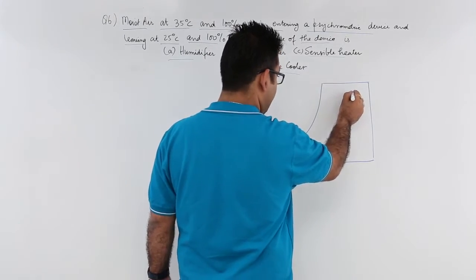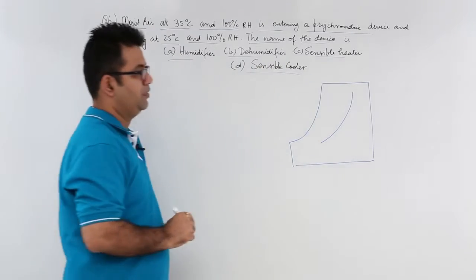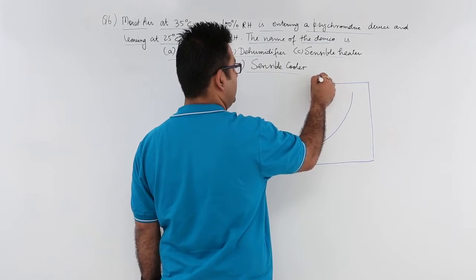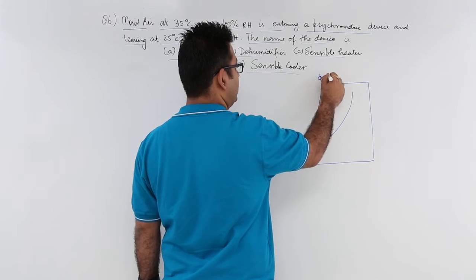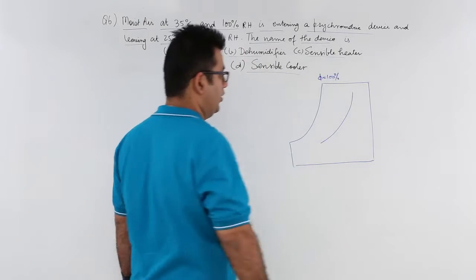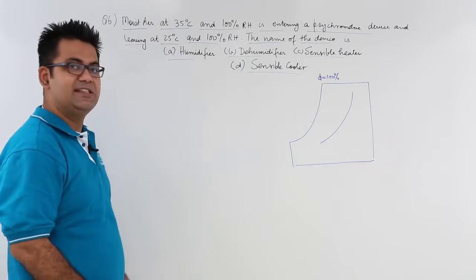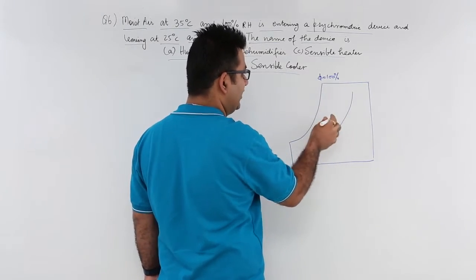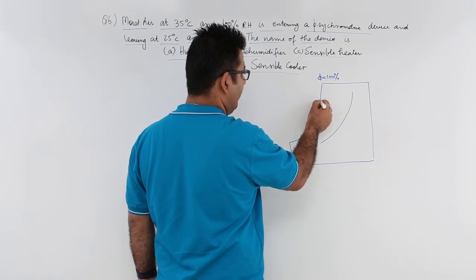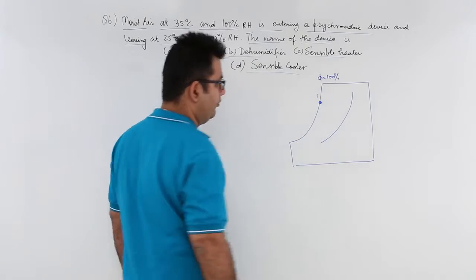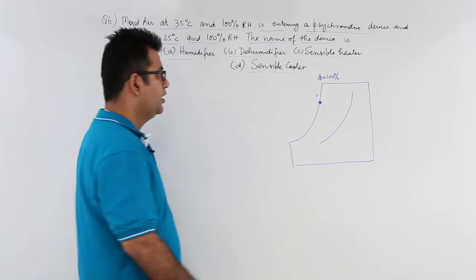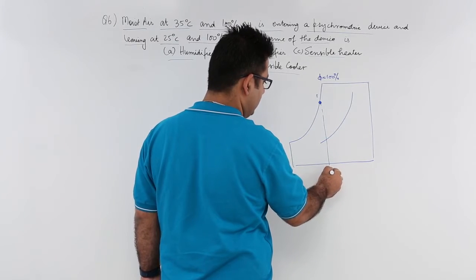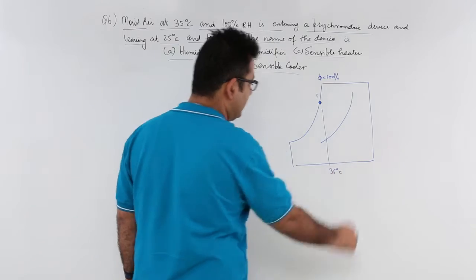Now this is your RH curve. This is 500%. Your DBT is decreasing. So let us say at 100% you will have the first point over here. The first point over here you will have this as 35 degree Celsius.